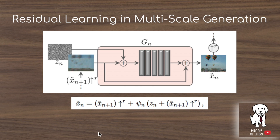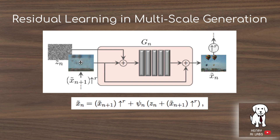Residual learning in multi-scale generation is a key idea in this paper. Starting with a 4x4 generated image, it is upsampled via nearest neighbor interpolation to 8x8. This is combined with an 8x8 Gaussian noise input via element-wise addition, passed through five convolutional layers, and then the original upsampled image is re-added to form the final output. This residual connection — propagating previous outputs forward — is the same idea as in ResNet, the most popular architecture in computer vision.